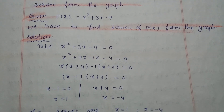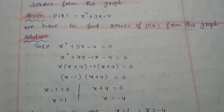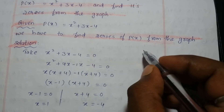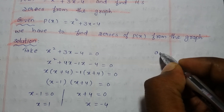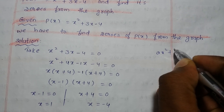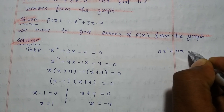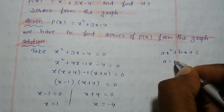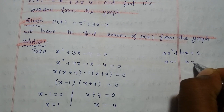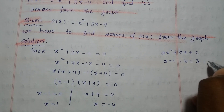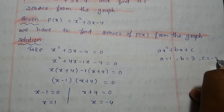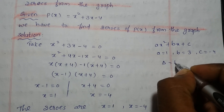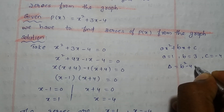For the solution, first find the nature of the roots by using b square minus 4ac. This is in the form of ax square plus bx plus c. So a value is 1, b value is 3, c value is minus 4. First calculate the discriminant, that is b square minus 4ac.